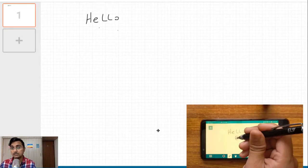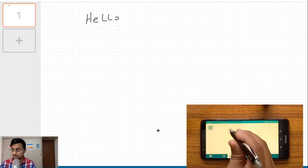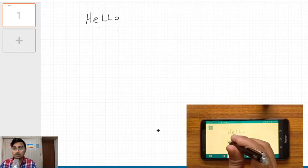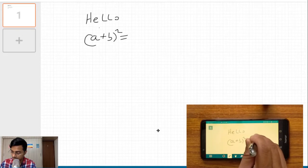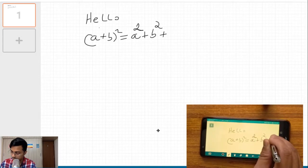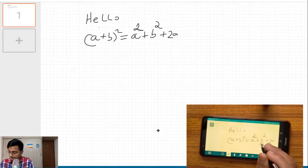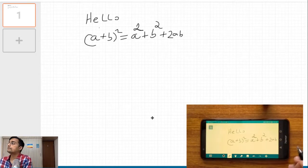So you can see that it's much easier to write using a stylus pen than using a mouse. Now the same way you can go ahead and write a math formula. Say (a+b) whole square equals a square plus b square plus 2ab, okay.